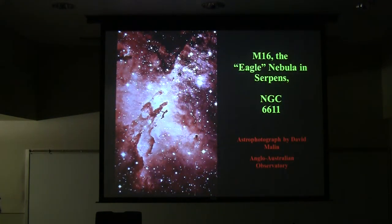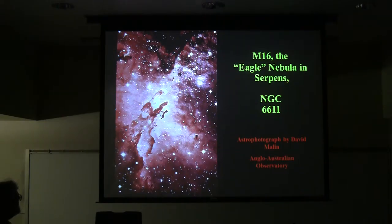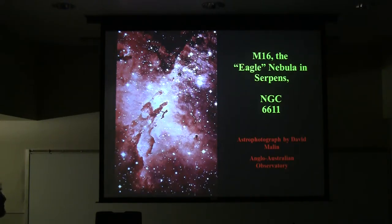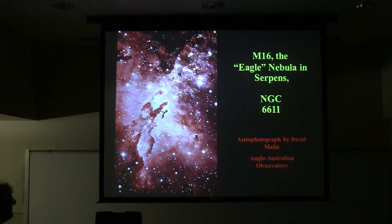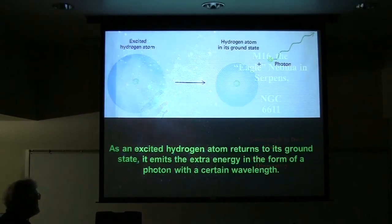Here's M16, the Eagle Nebula in Serpens, with the Pillars of Creation that you see in many Hubble pictures. This is with an Earth-based telescope, but you've seen this part of it. All this red glowing light comes from the stars getting hot and causing the nebula to glow.